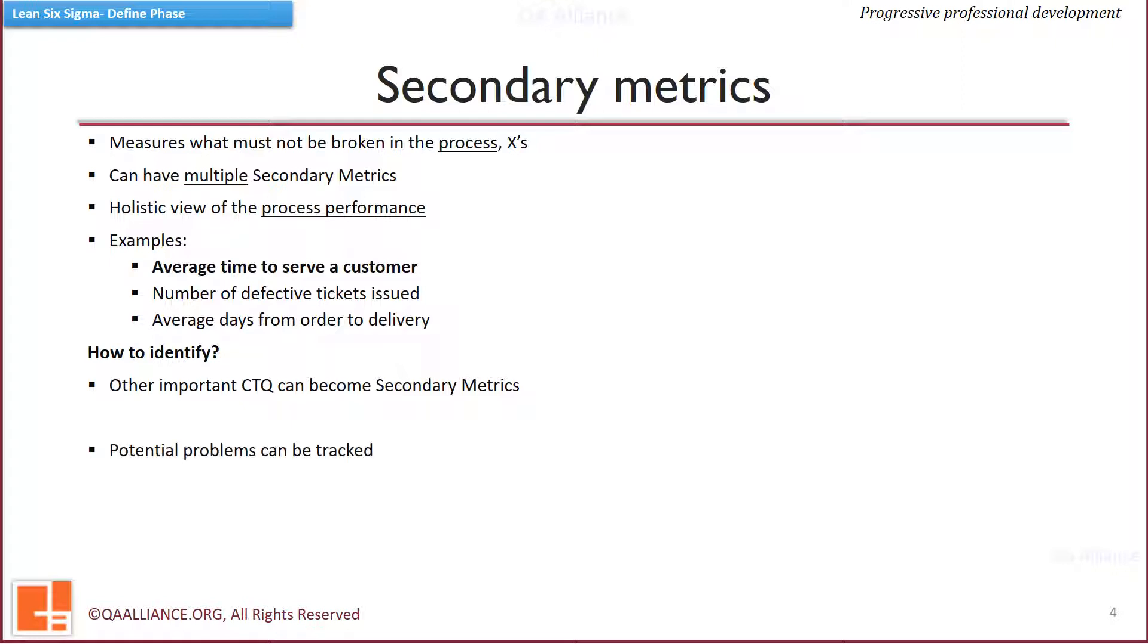Second method can be potential problems. Another method of finding out secondary metrics is to figure out what can possibly go wrong with the Six Sigma project. Anything which has a chance of reversing or reducing the improvements made by the Six Sigma project need attention and can be tracked as a secondary metric.